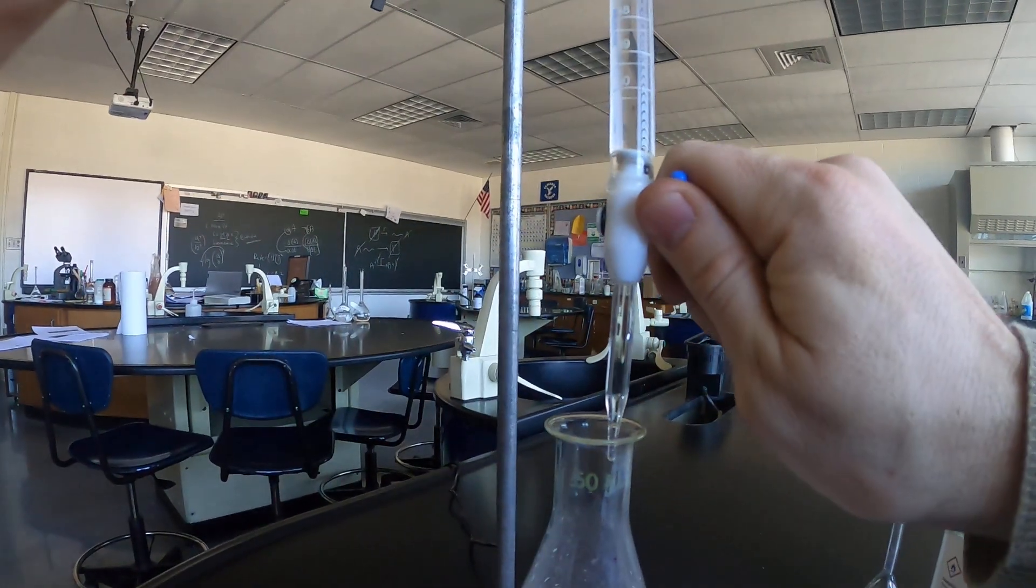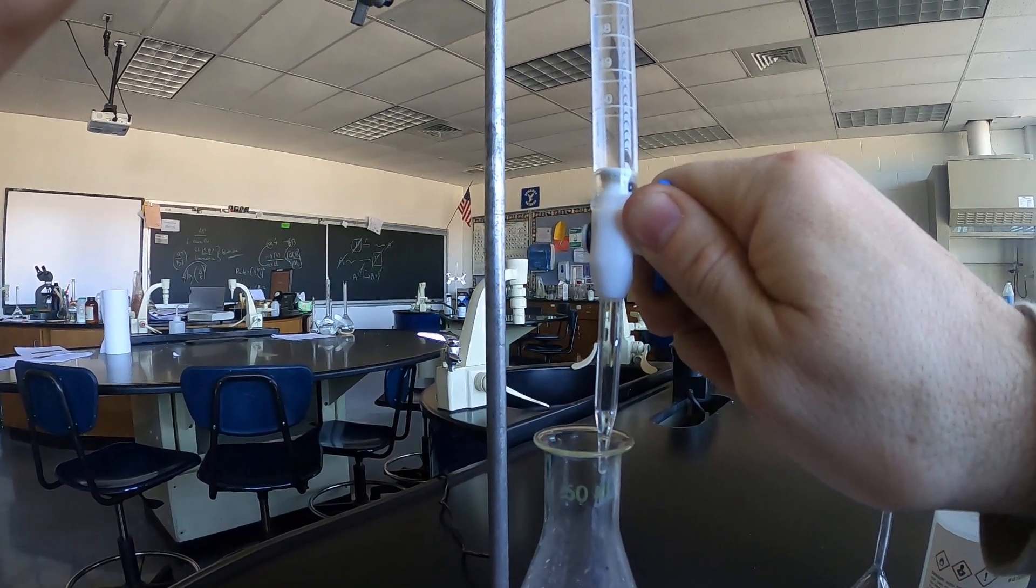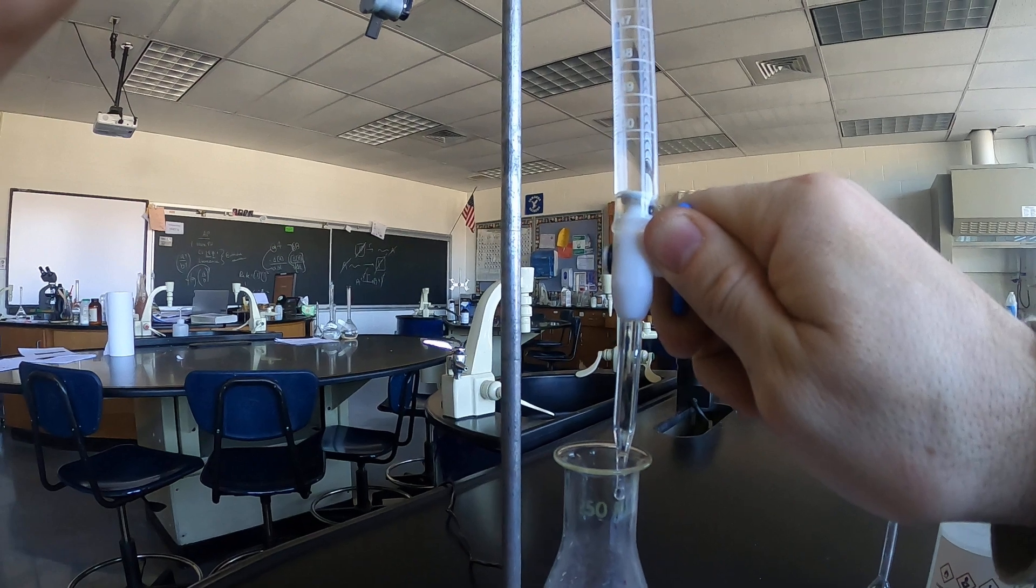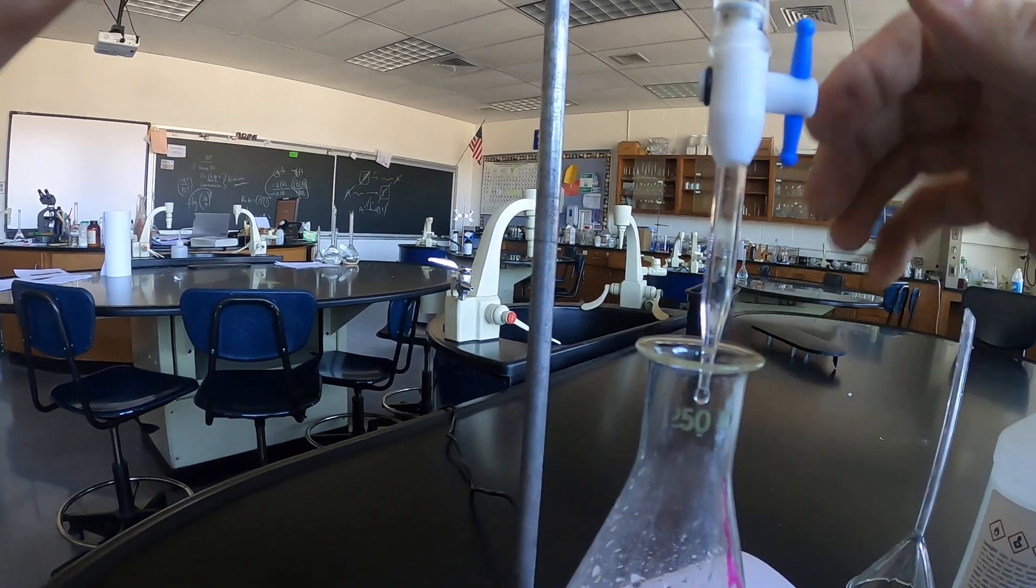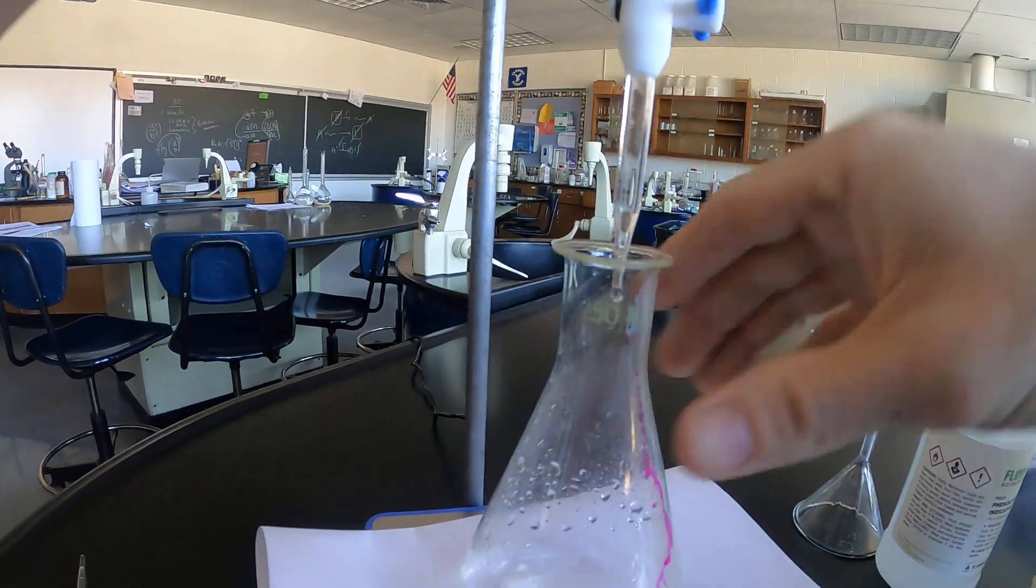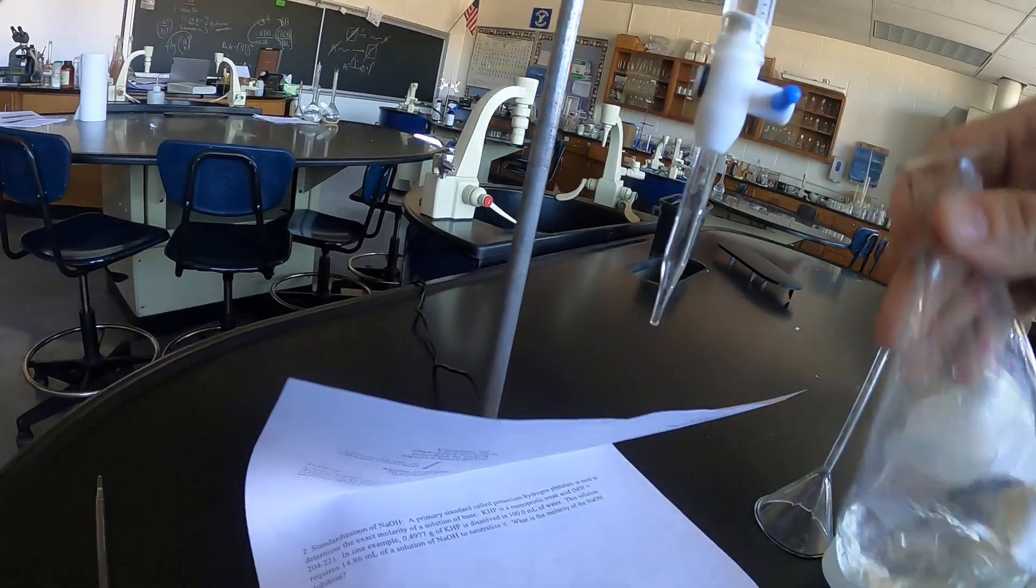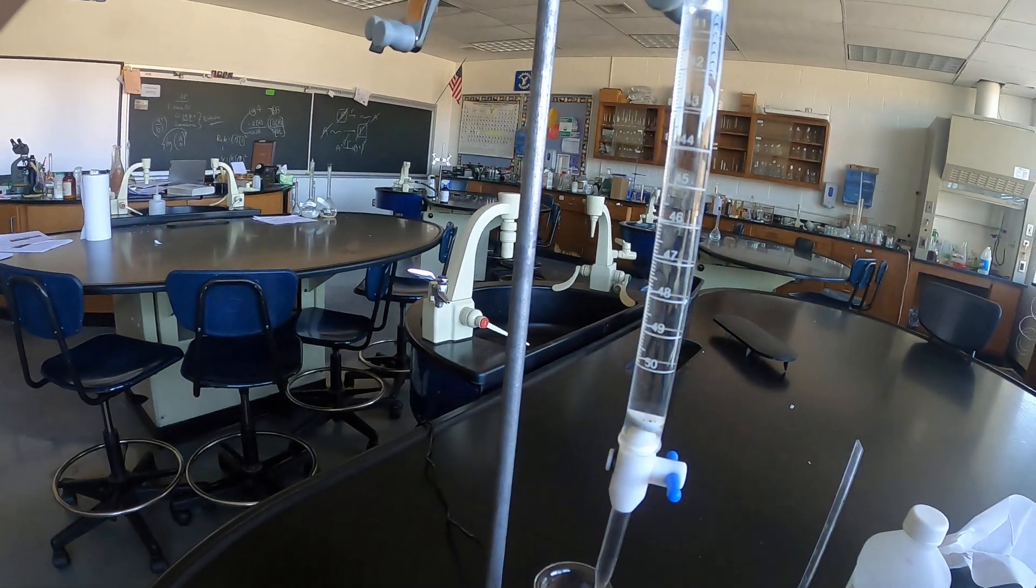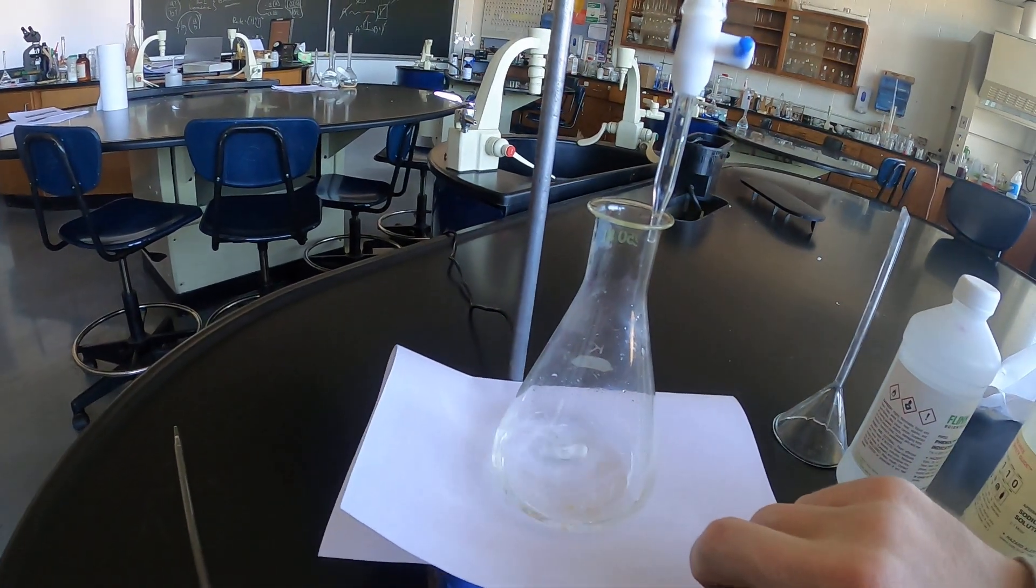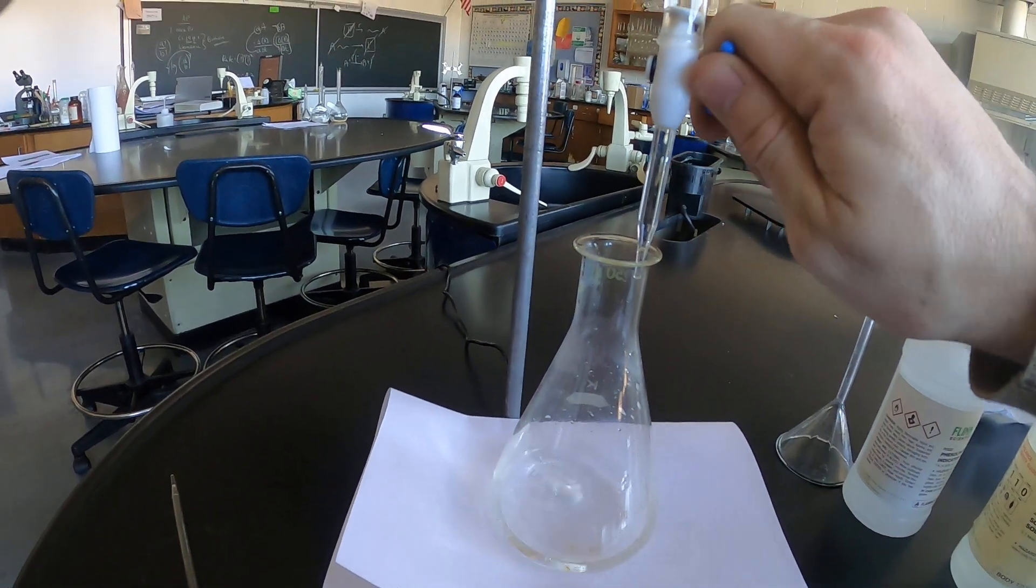At this point in the titration you want to adjust the stopcock so that you are titrating dropwise which takes a little bit of practice. Okay now this is coming out dropwise. I'm gonna swirl this to get this base and analyte off the side. I have a white piece of paper underneath so that I can see the background clearer. And I'm going back to dropwise additions.